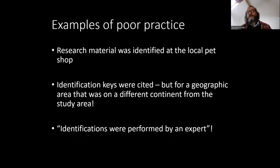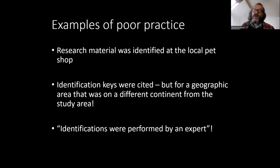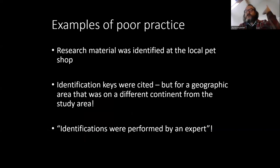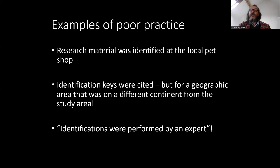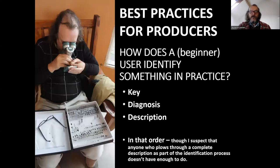There are some humorous examples: research material was identified at the local pet shop; identification keys were cited, but for foreign organisms from a different continent; identifications were performed by an expert — and that's like saying statistics were done by a statistician, all p-values are significant. You haven't been able to get away with treating statistics that way since the 1950s. But taxonomy can be presented in a completely unscientific way in research papers and people do not worry about that.